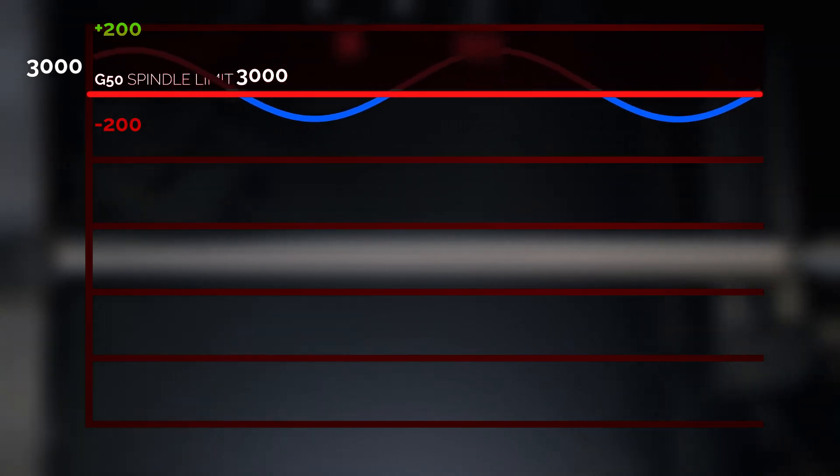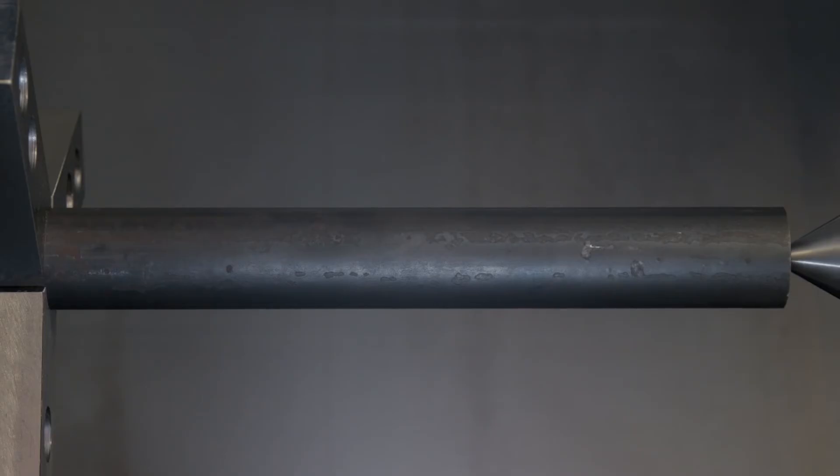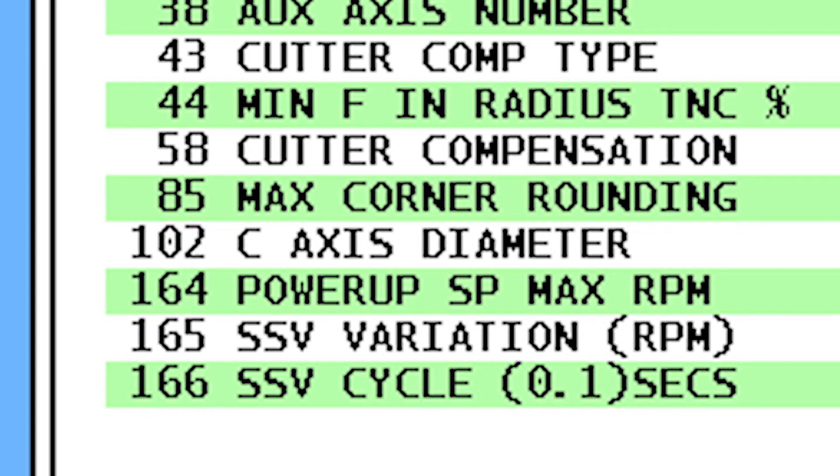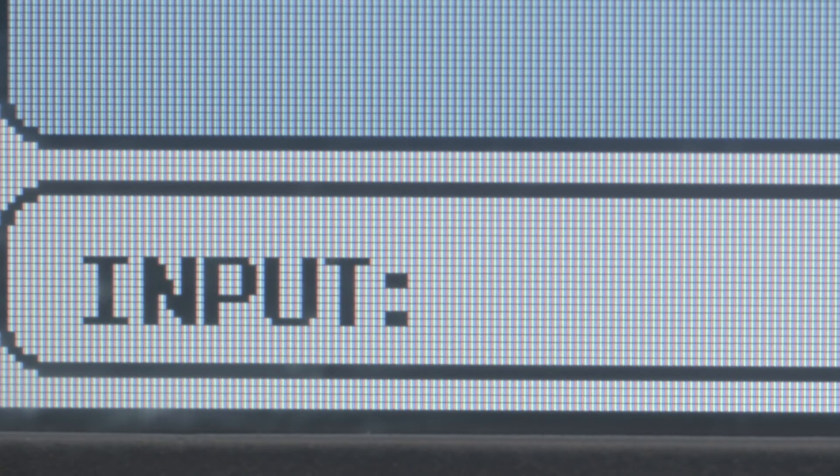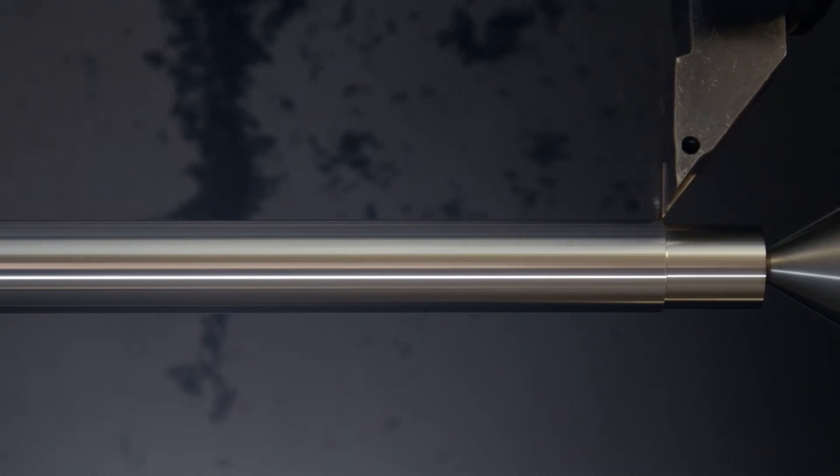There are only three variables that we can change here. We don't want to increase the G50 setting, because we're afraid of throwing the part. And we know our SSV settings are allowing for a good finish, so we don't want to touch those. That leaves us with G96 as the logical value to change. In this scenario, we'll reduce the G96 setting from 775 down to 700, which still allows the insert to cut decently.